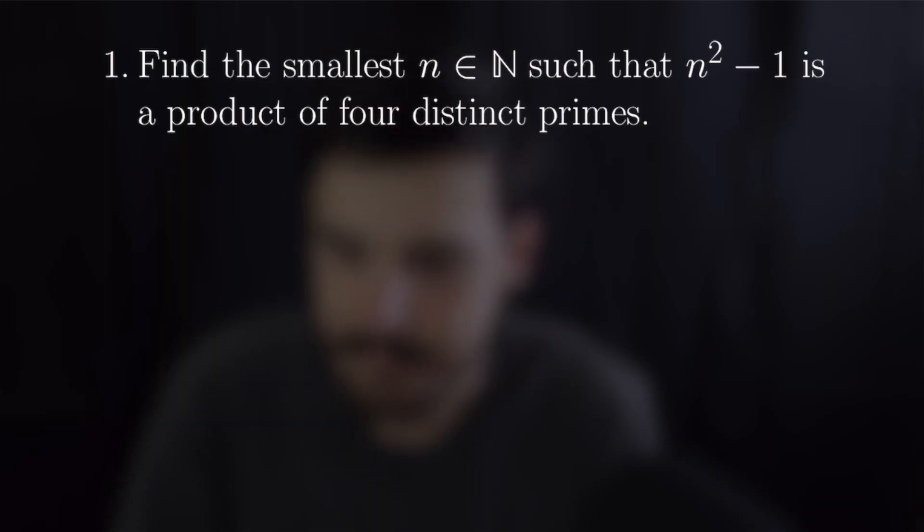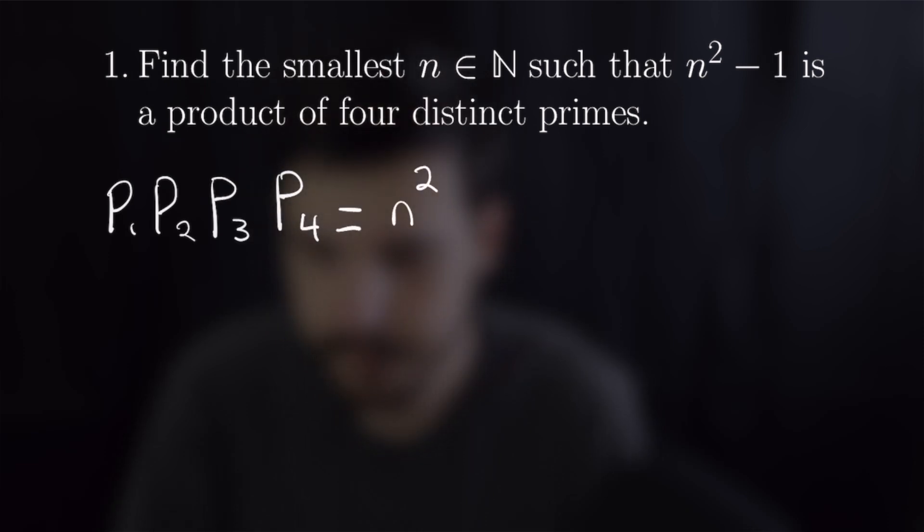Our first example says find the smallest natural number such that n squared minus one is a product of four distinct primes. Okay well we can write that like this. So we're going to write four primes p1, p2, p3, and p4 is equal to n squared minus one and then we're going to split that n squared minus one up into n plus one times n minus one.